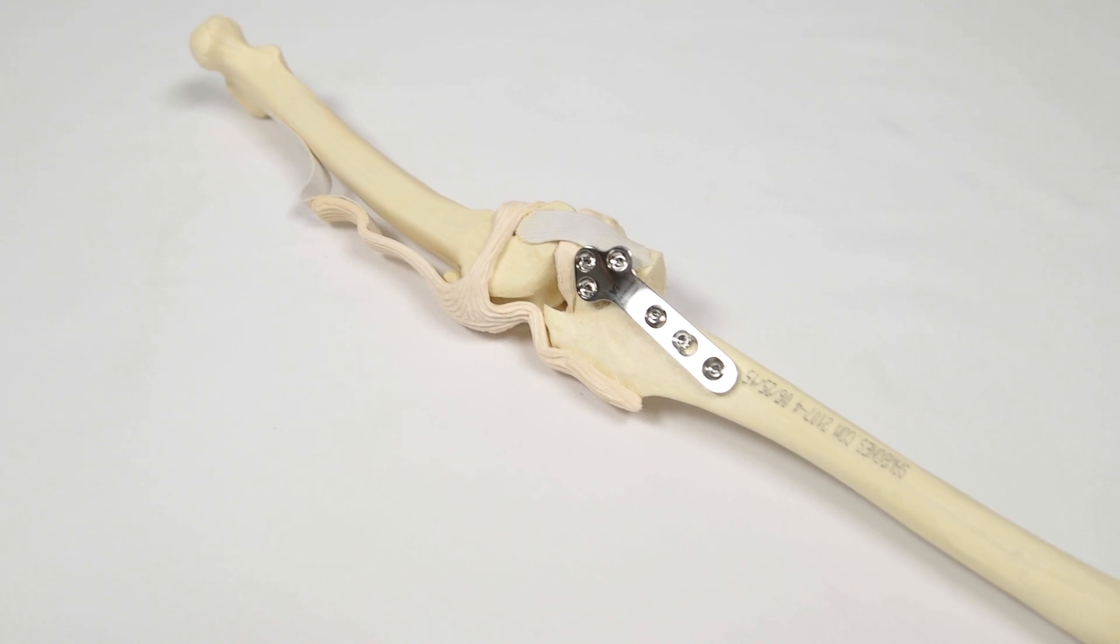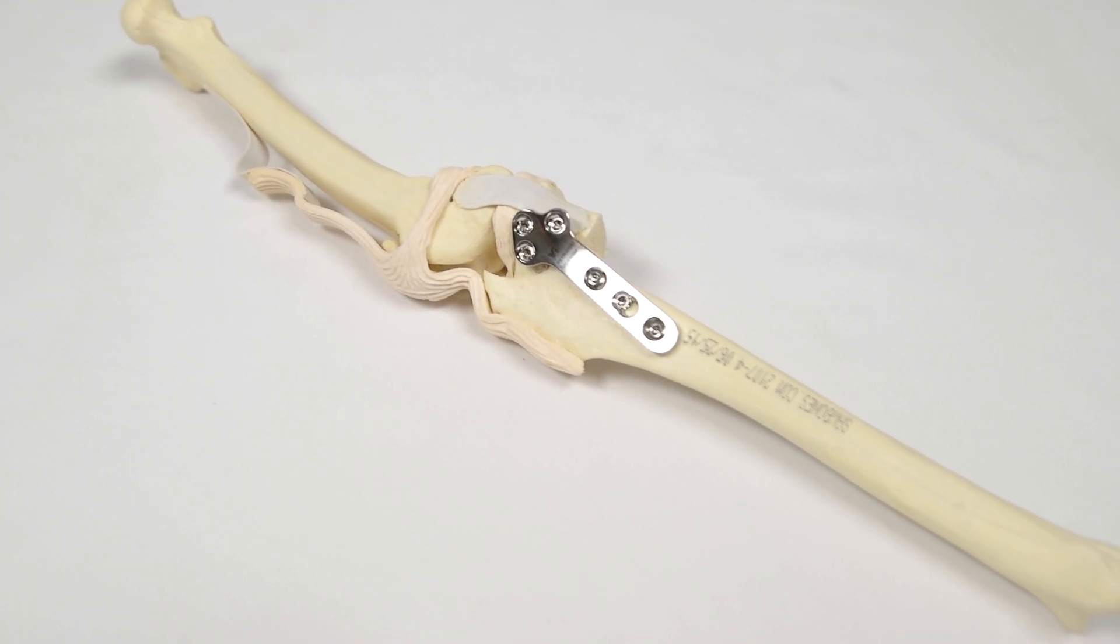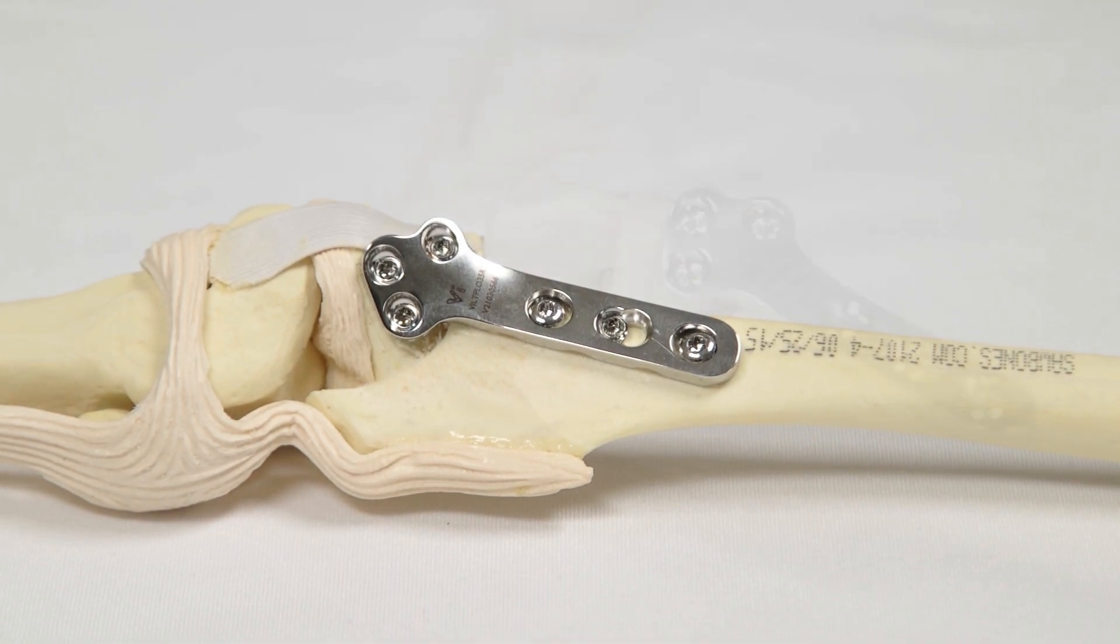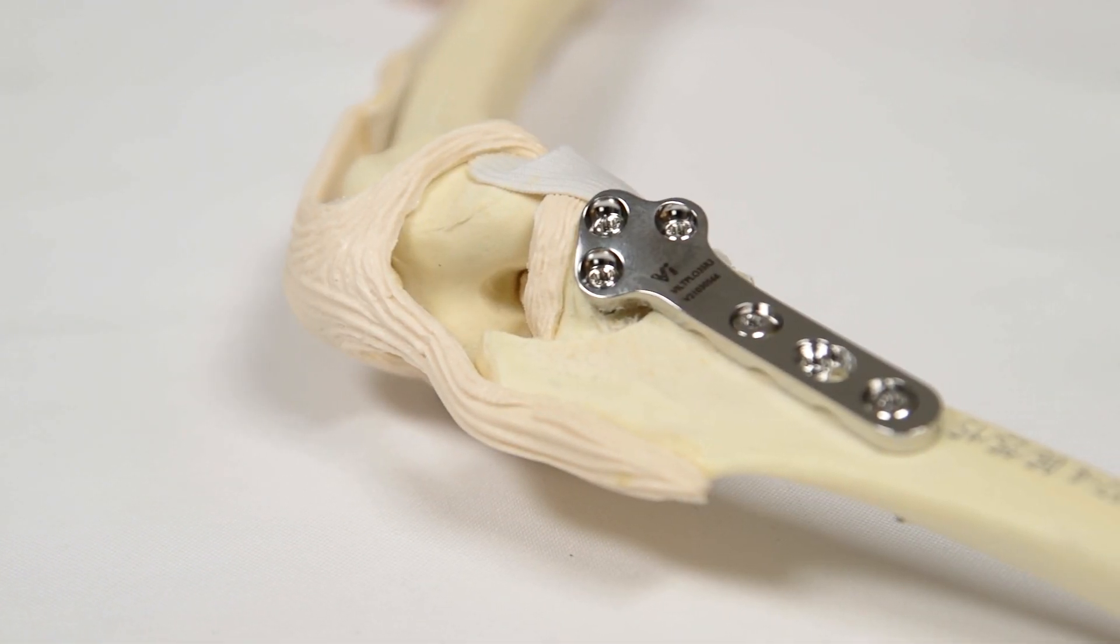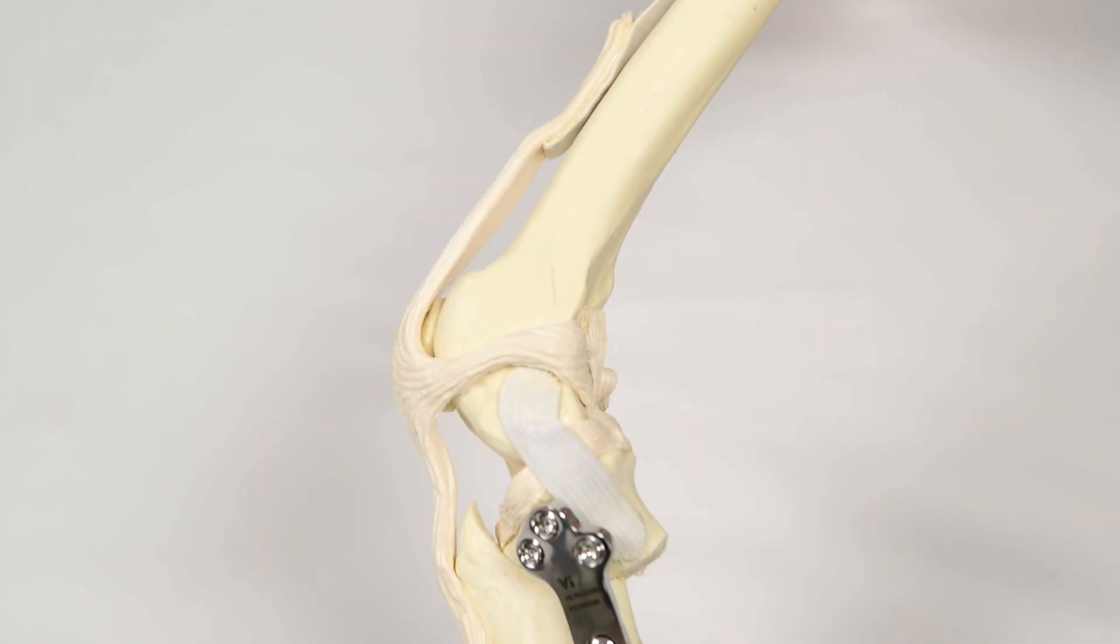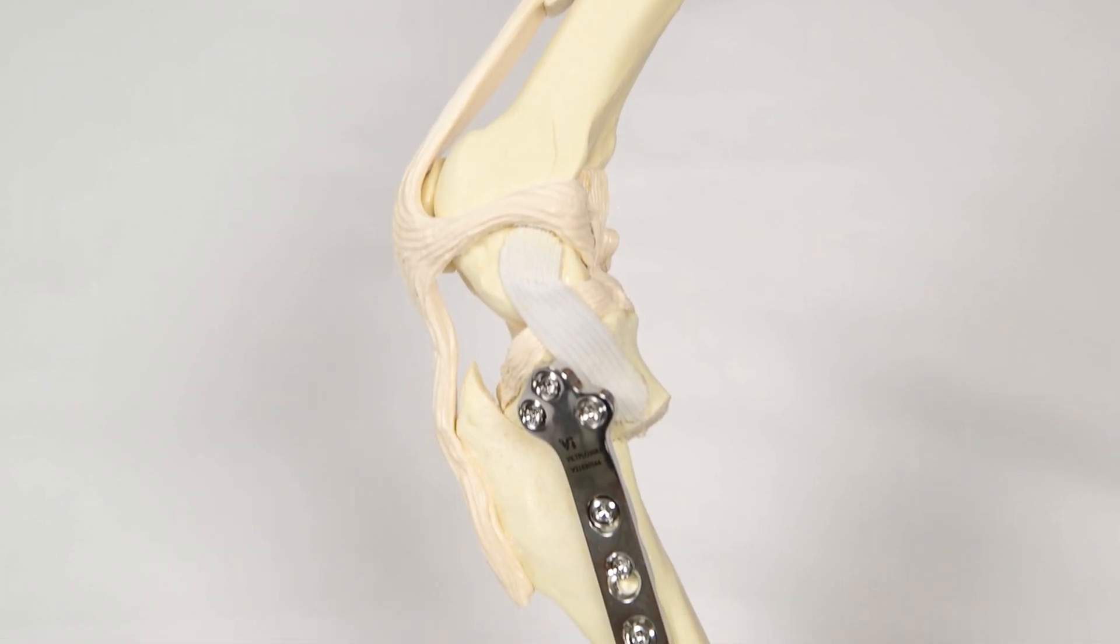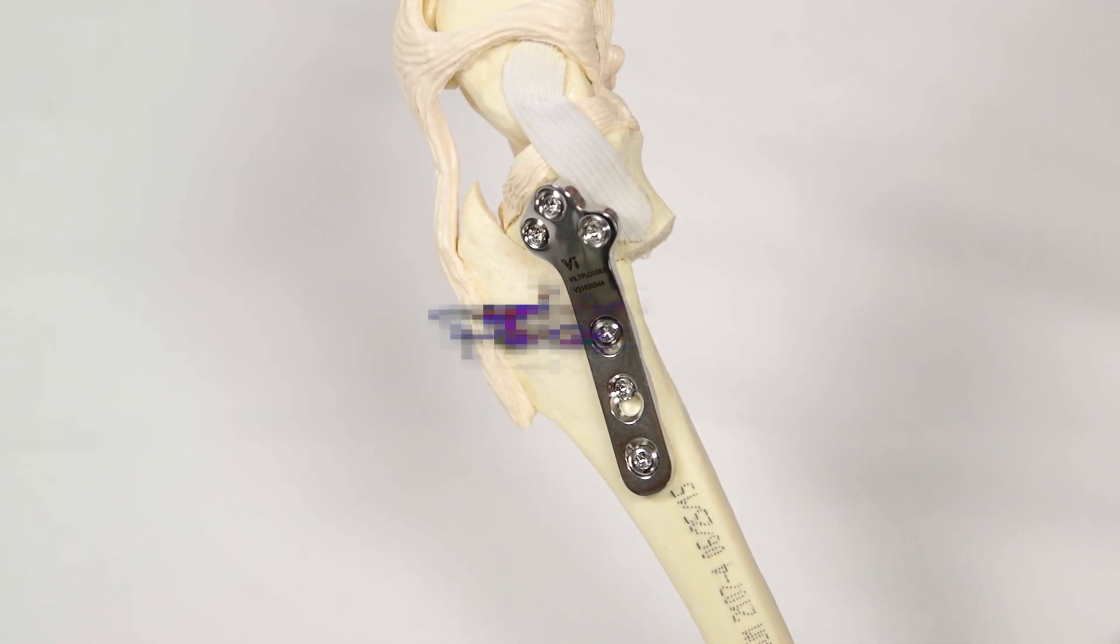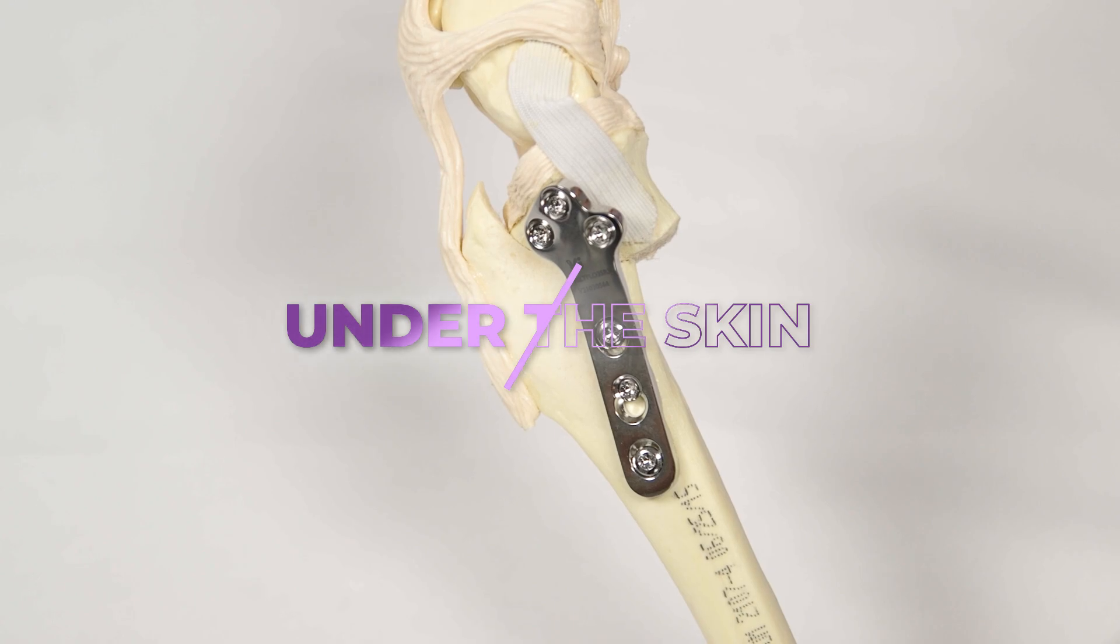We are looking at radial cut tibial plateau leveling osteotomy, or TPLO, using a locking plate for stabilization of the stifle following cranial cruciate ligament rupture. This procedure alters the functional geometry of the stifle joint to restore stability during weight-bearing. So, let's go Under the Skin.